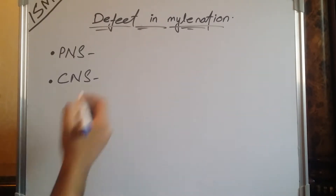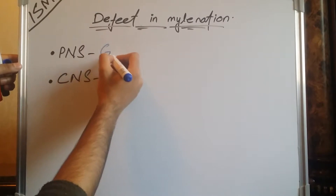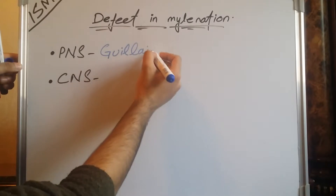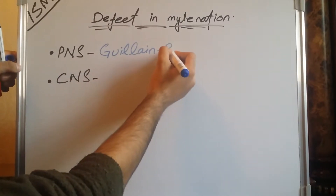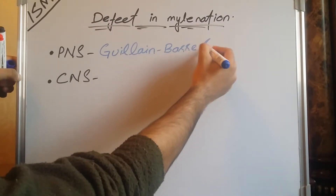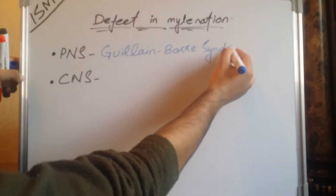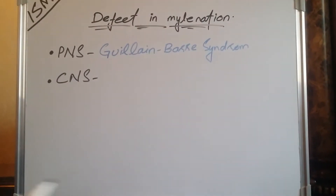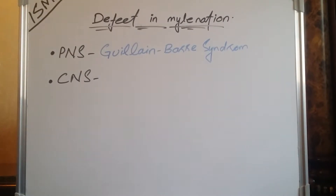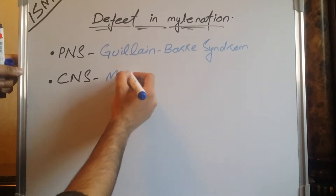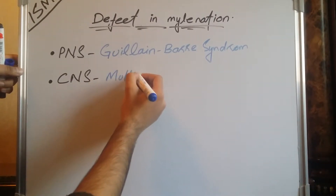If this pathological condition occurs in the peripheral nervous system, then it is called Guillain-Barré syndrome. And if this pathological condition occurs in the central nervous system, then it is called multiple sclerosis.